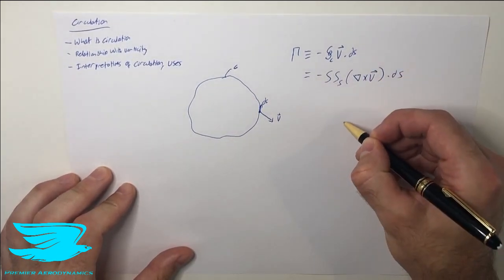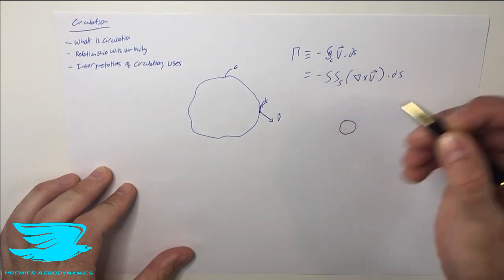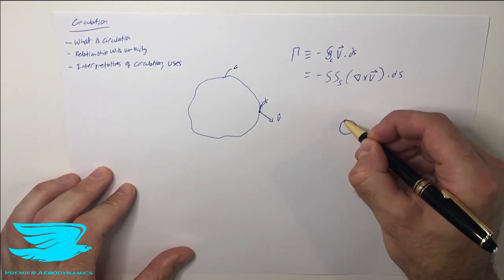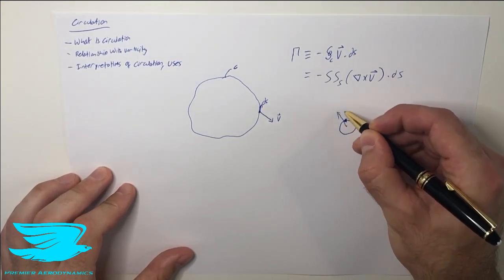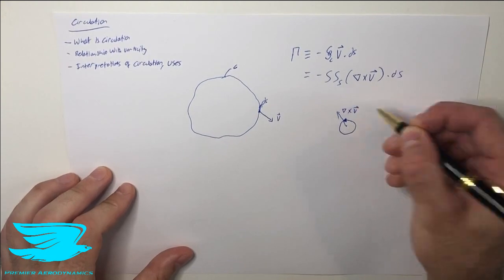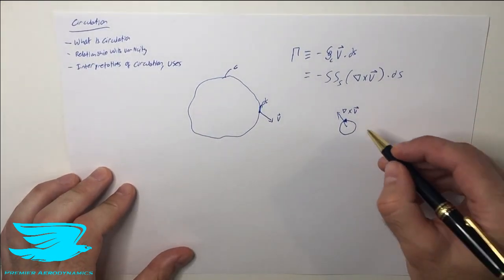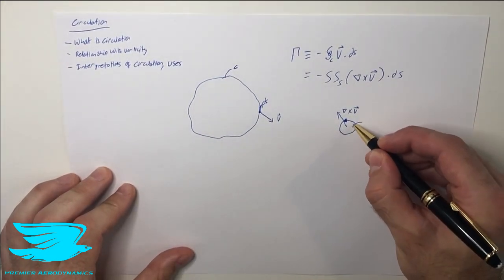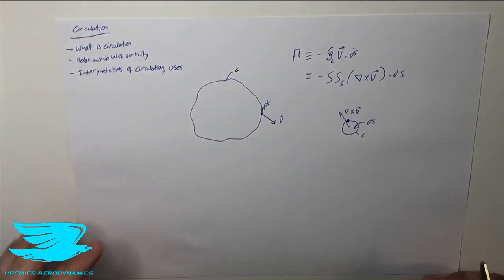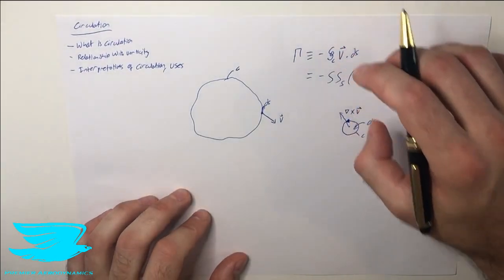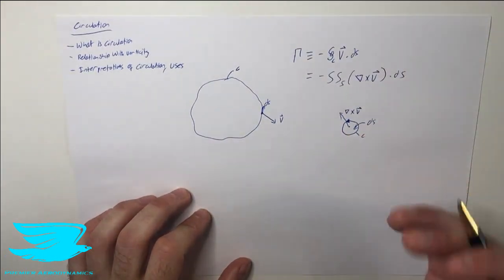Let's say we have another part here, it can be anything. It's just the surface integral of the vorticity, which is del cross product with the velocity vector. And we know what ds is here. And this is a closed loop as well.